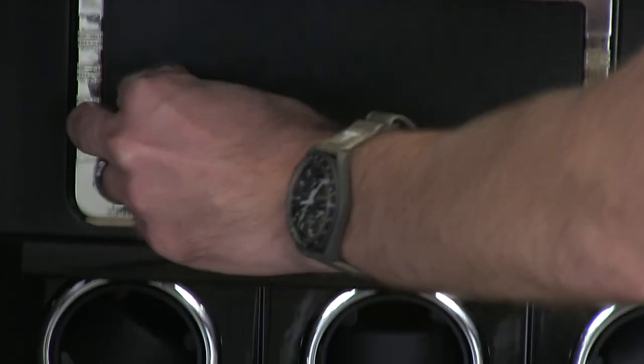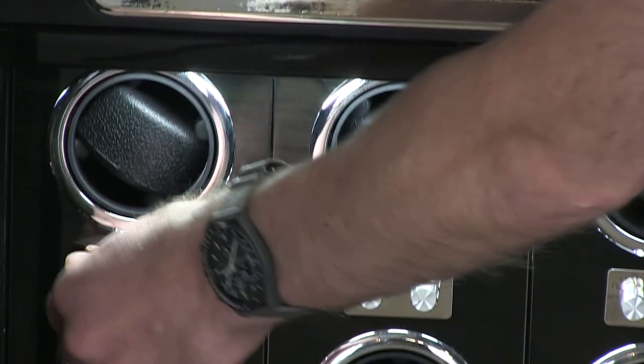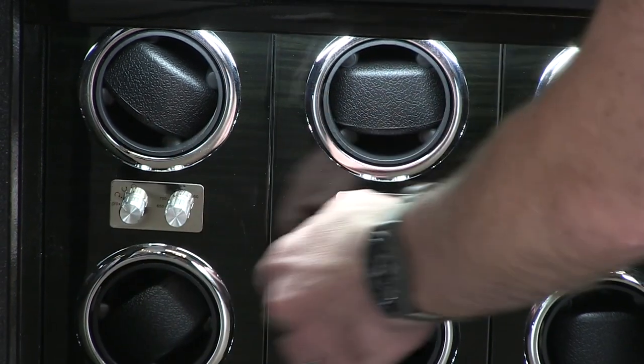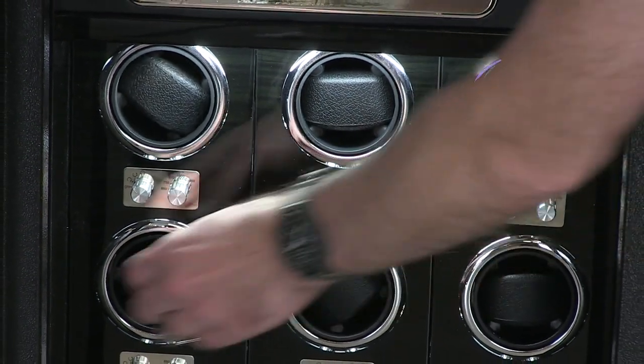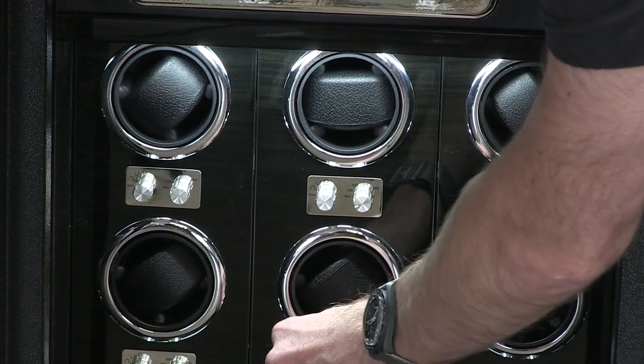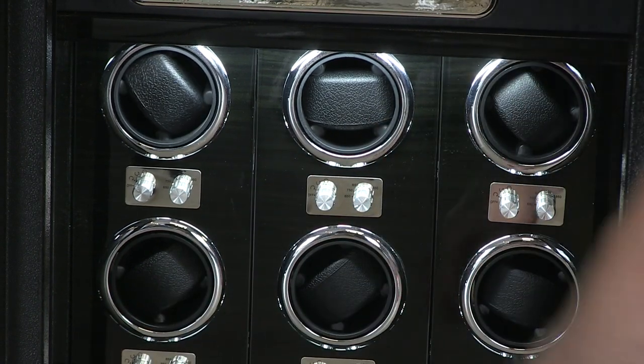Then you've got your six watch winders and you can turn them on here and you can see they're spinning and rotating to keep your watches wound this way.